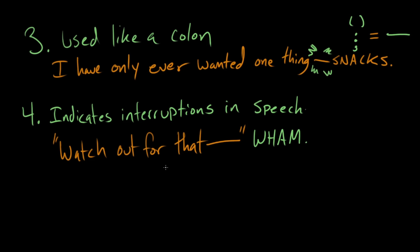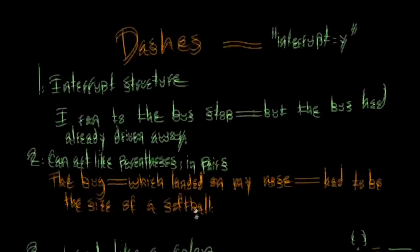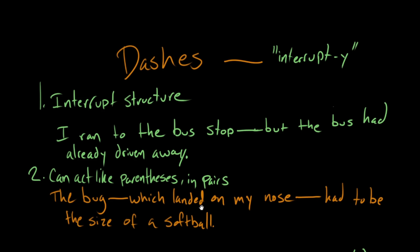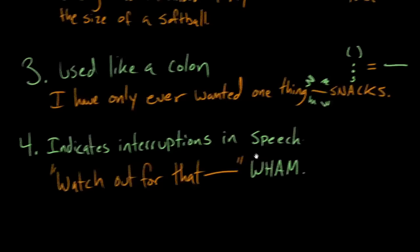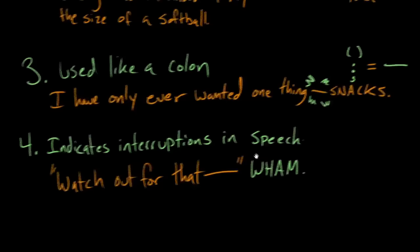So that's what dashes can do. They are used to mark interruptions in the structure of a sentence. Like, I ran to the bus stop—but the bus had already driven away. They can act like parentheses when they're used in pairs. Like, the bug—which landed on my nose—had to be the size of a softball. You can use them like a colon to lead into lists or to link an idea. So I have only ever wanted one thing—snacks. And they can indicate interruptions in speech. Like, watch out for that—Wham! That was good. Thanks. And those are the functions of the dash. You got it. You can learn anything. David out. Paige out.